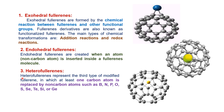Heterophilorene represents a third type of modified philorene in which at least one carbon atom is replaced by a non-carbon atom such as boron, nitrogen, phosphorous, sulfur, etc. In this case the philorene carbon atom is replaced by another hetero atom, resulting in complete replacement of a carbon atom from the philorene molecule to produce hetero philorene.